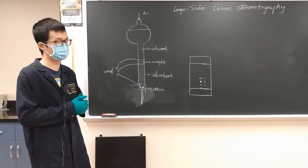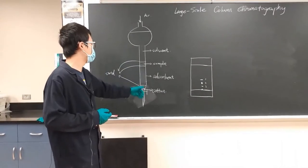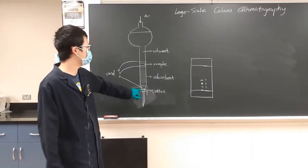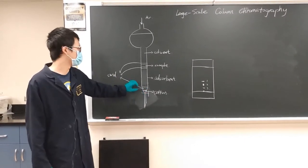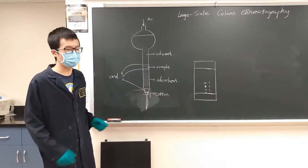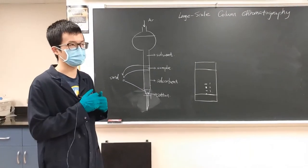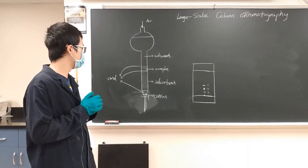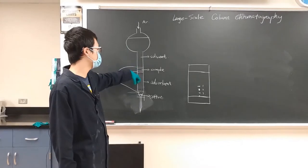Here is how we load this column. At the bottom we need some cotton, then we put some sand on the cotton. Then we mix the silica gel with a nonpolar solvent, which is hexane or other nonpolar solvent, to make it into a slurry and pour it in.